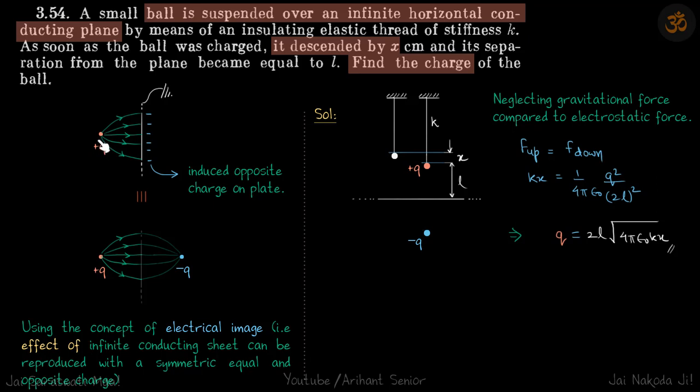So you have a charge in front of an infinitely conducting sheet. If it's infinitely conducting, you can say it's grounded or its potential is zero. If you place a positive charge there, negative charge will come on the sheet.